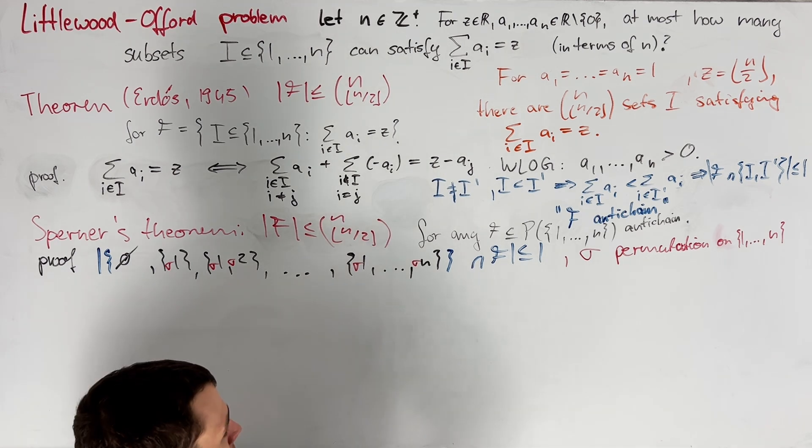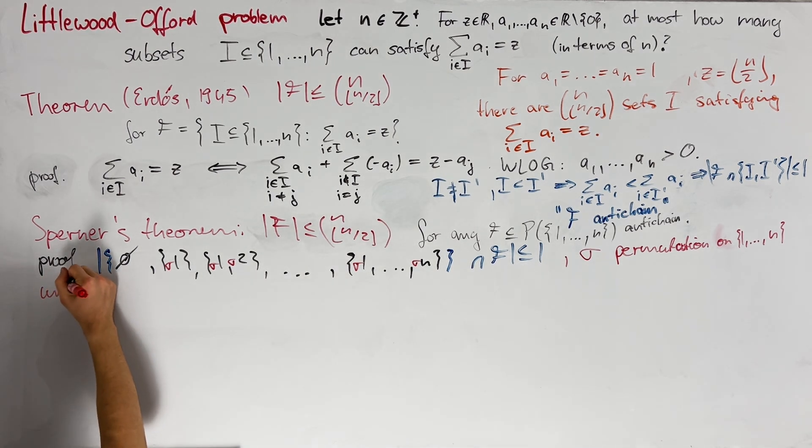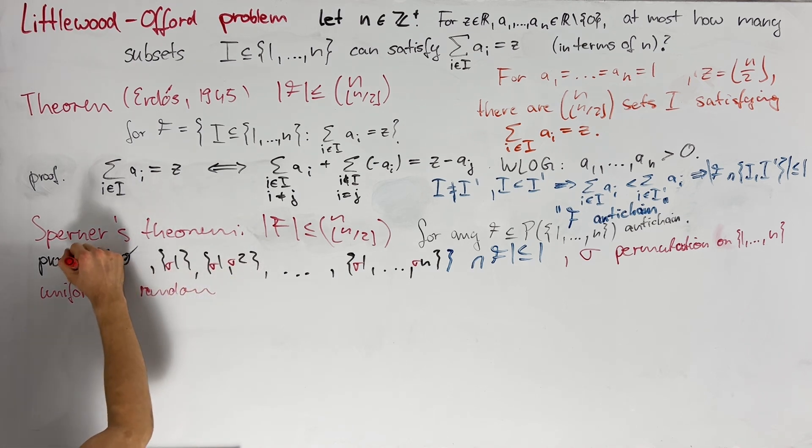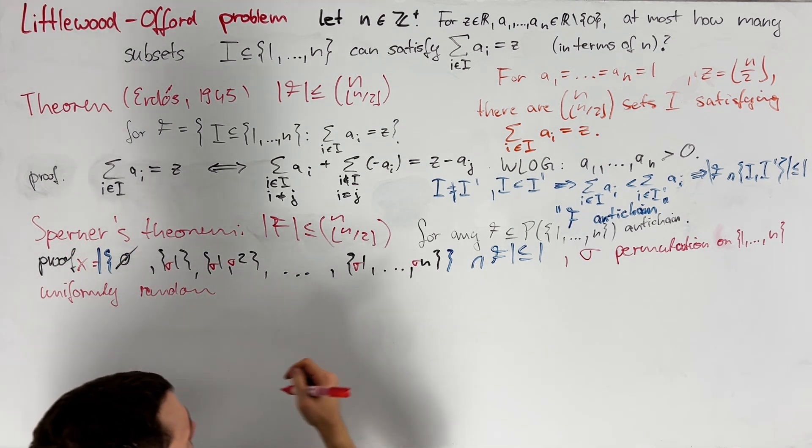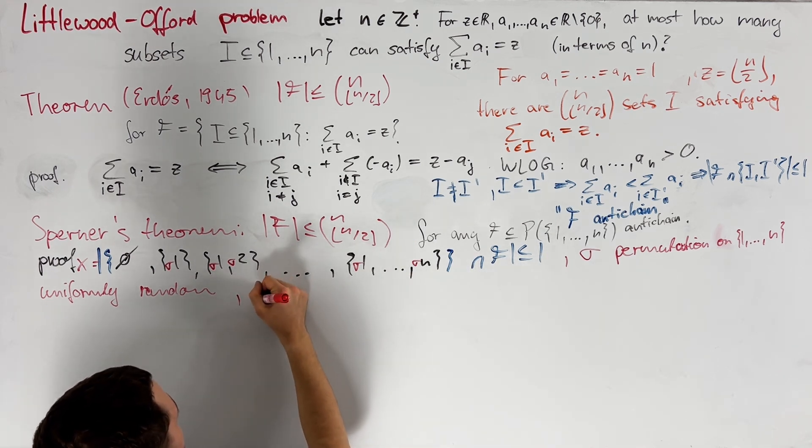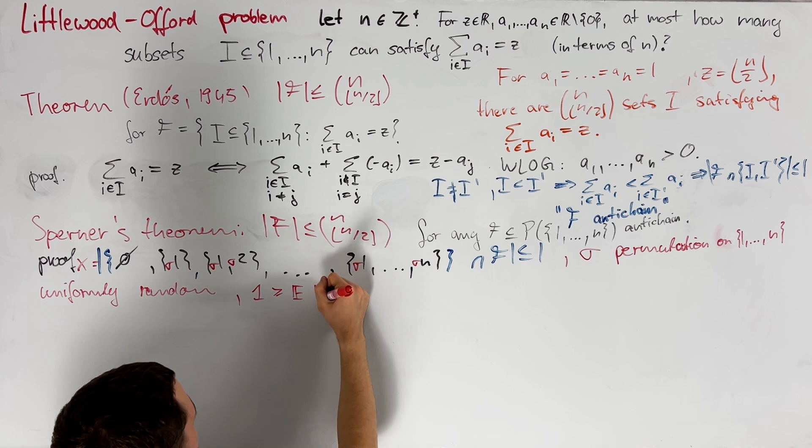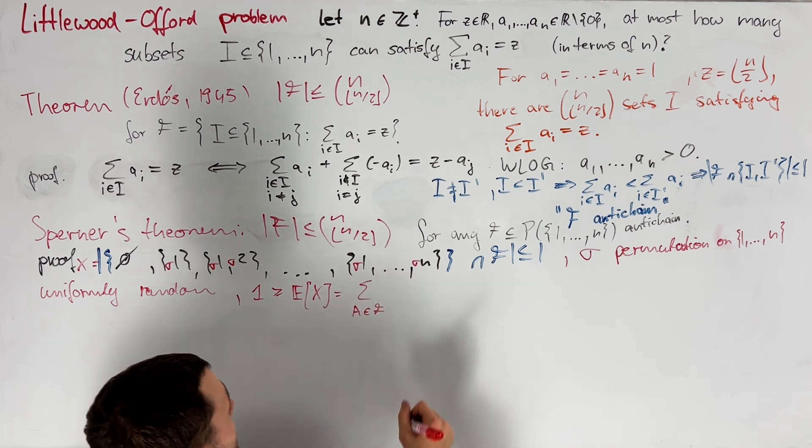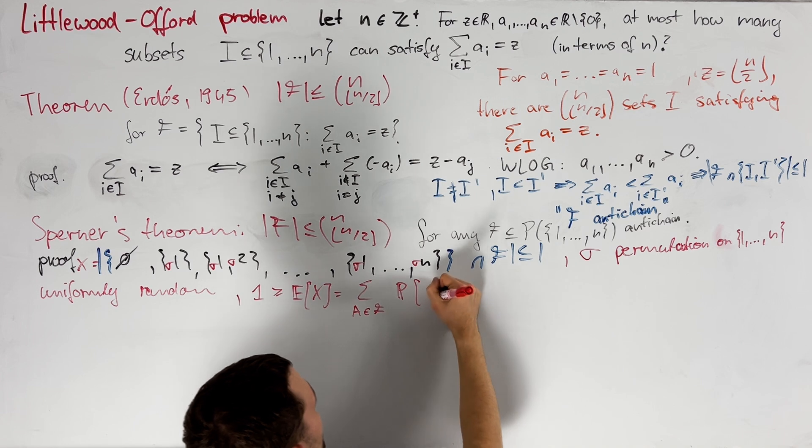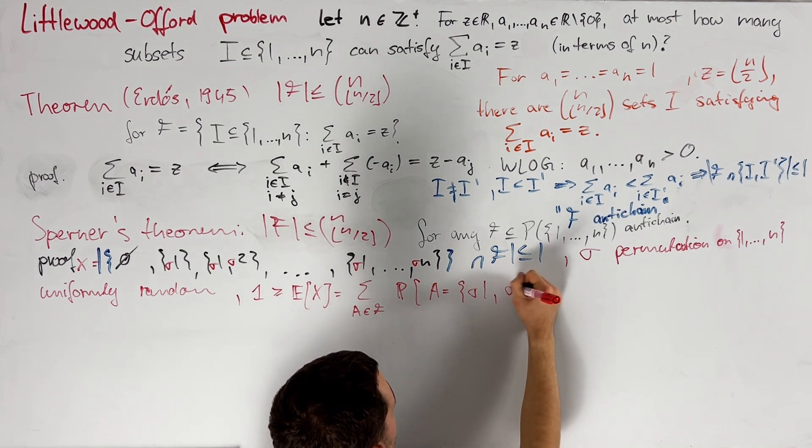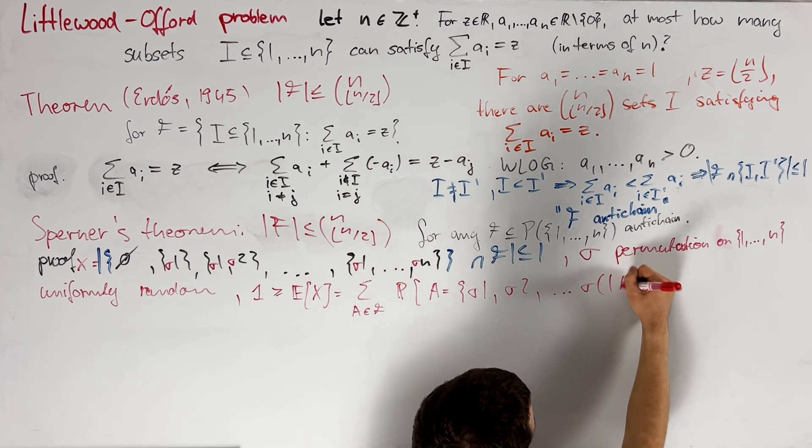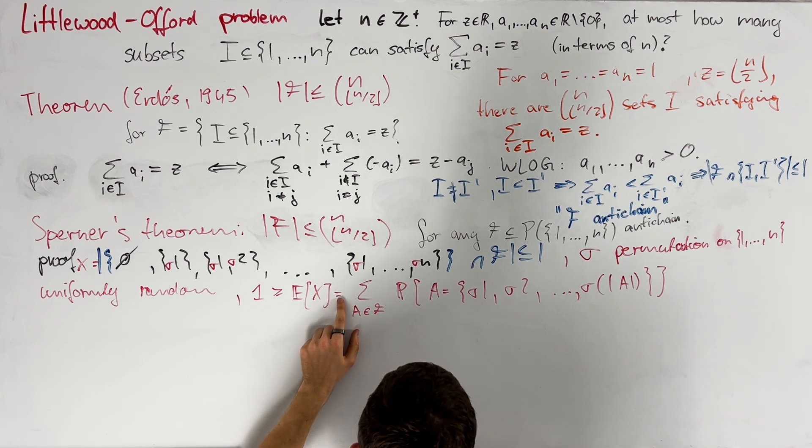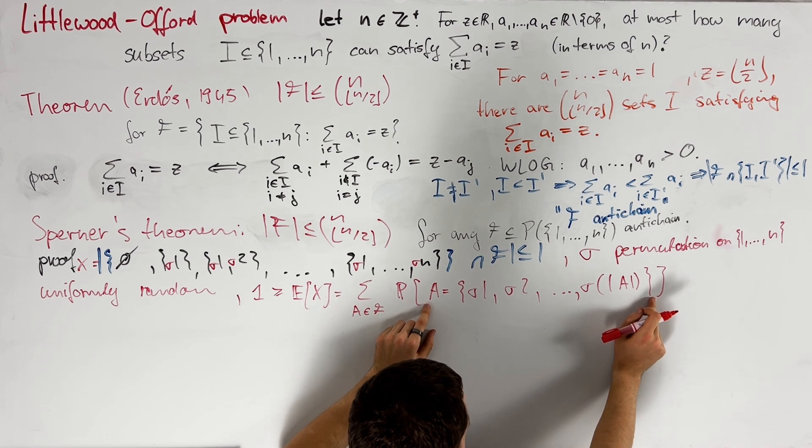So let us pick sigma as a uniformly random permutation of 1 up to n, and then define a random variable x by the size of the intersection of F with this chain, which means that x is less than or equal to 1. So we have that 1 is greater than or equal to its expectation, which we can also rewrite as the sum of all elements a in F of the probability that a is equal to sigma 1, sigma 2 up to sigma of the size of a. This equality holds by linearity of expectation, and because x is the sum over a in F of the indicator random variables of these events.